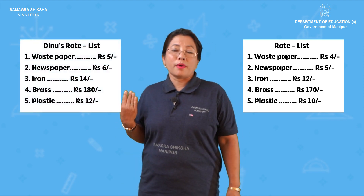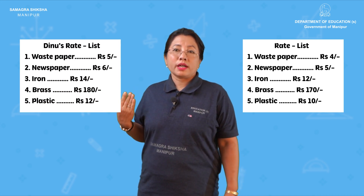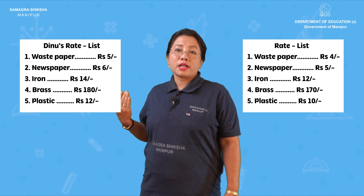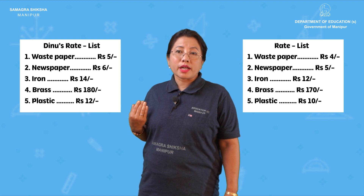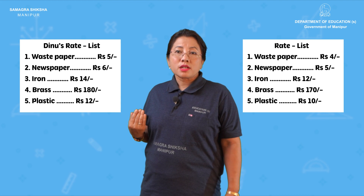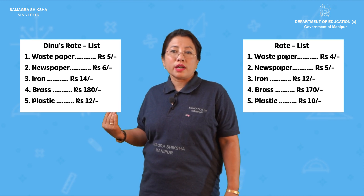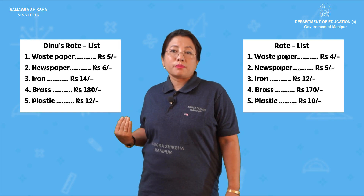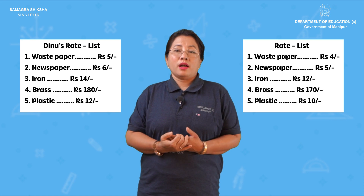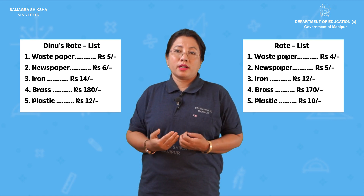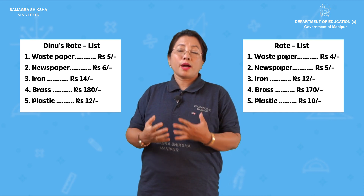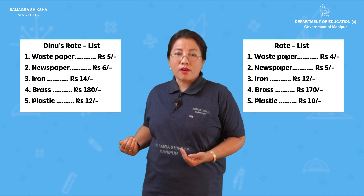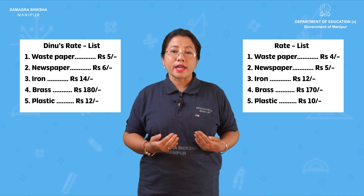If you buy one, you will need to buy one for two, with one for 30 rupees. The price of the newspaper is worth noting. If iron is 12, it is 14. If brass is 170, it is 180. If plastic is 10 rupees per kg, it is 12 rupees per kg. The price will be 10 rupees per kg.